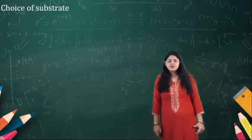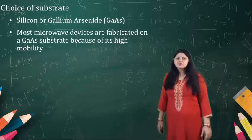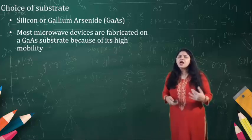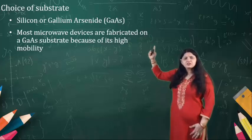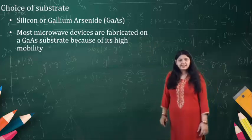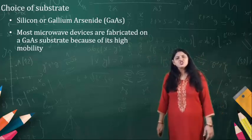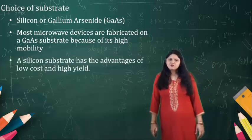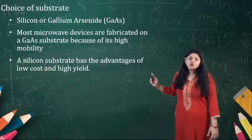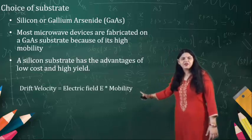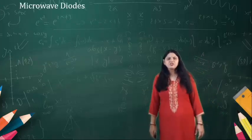While we are making the diode, the choice of substrate is important — specifically which material provides you the high mobility of the electron. Here, silicon or gallium arsenide can be used. Most microwave devices are fabricated on a GaAs substrate because of its high mobility. A silicon substrate has the advantage of low cost and high yield. The drift velocity is the electric field multiplied by the mobility of the electron.